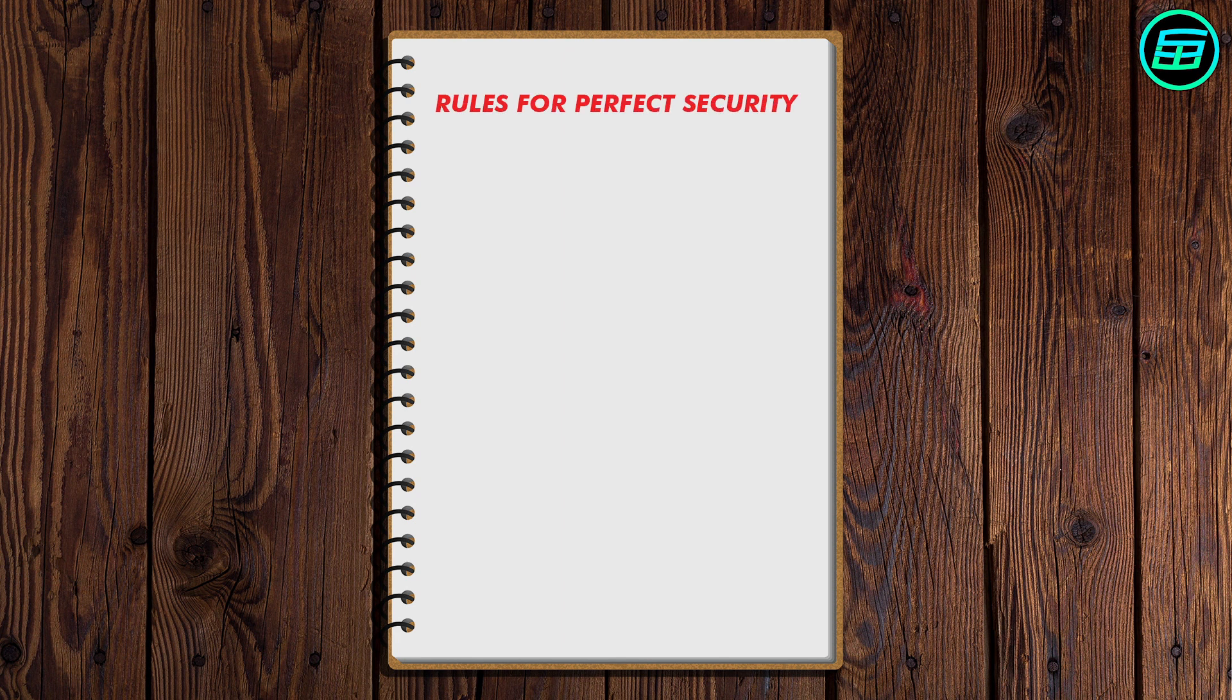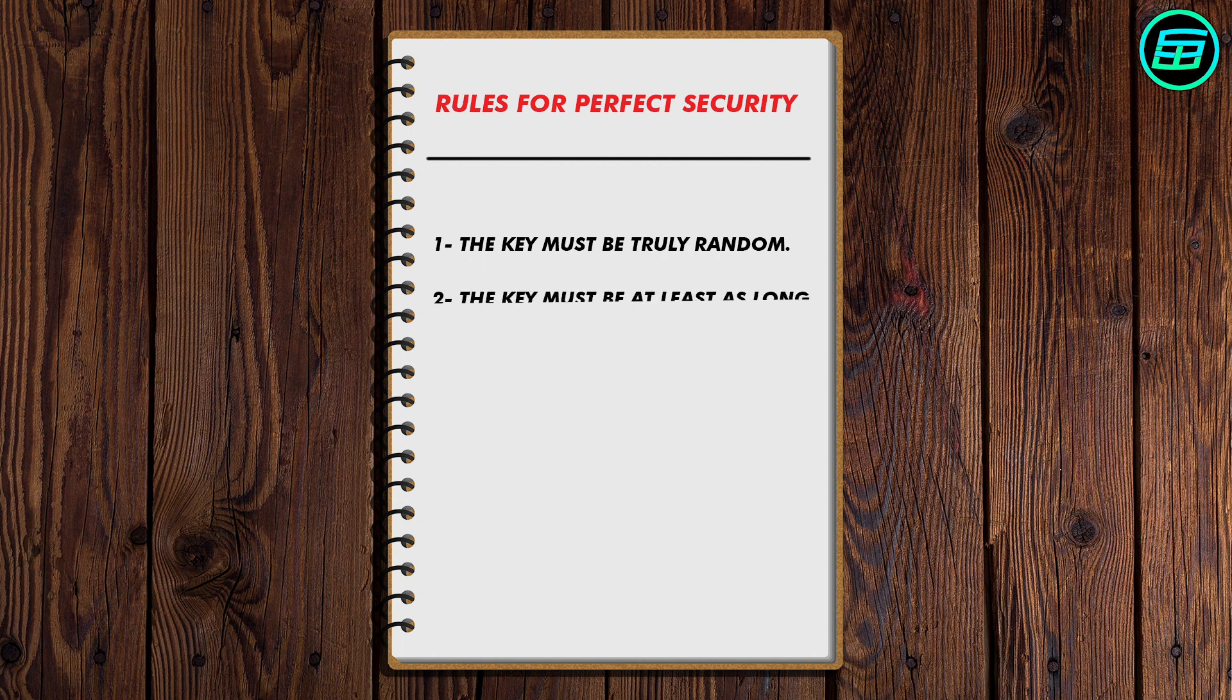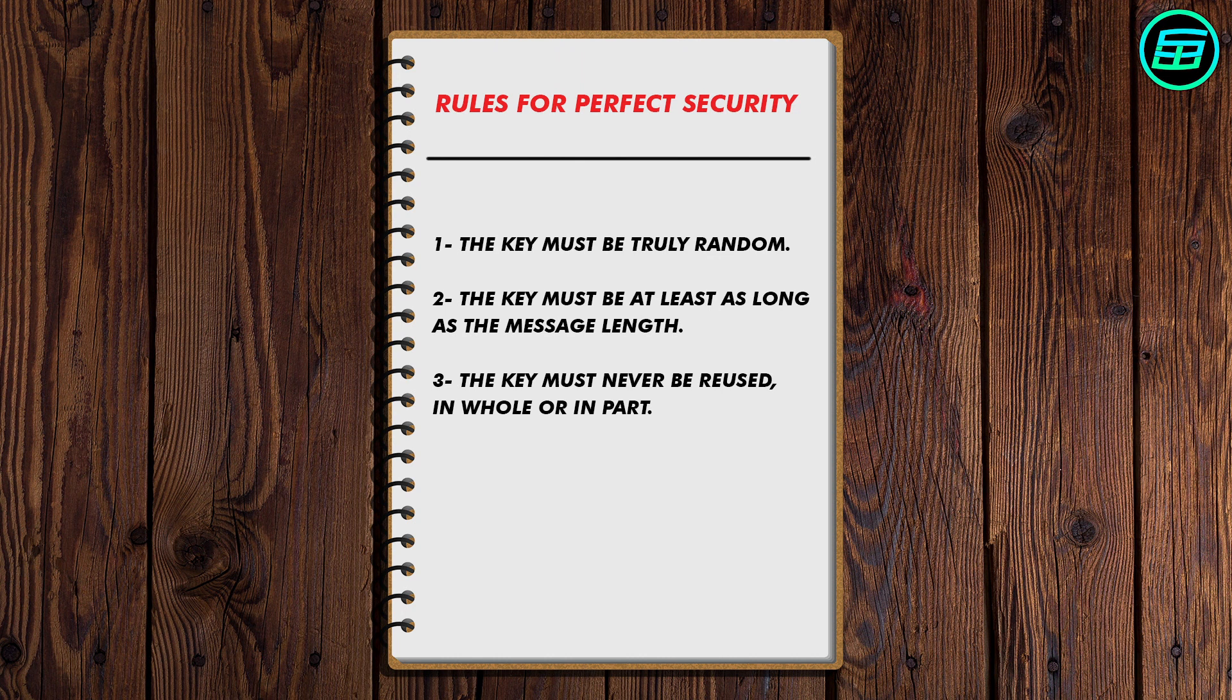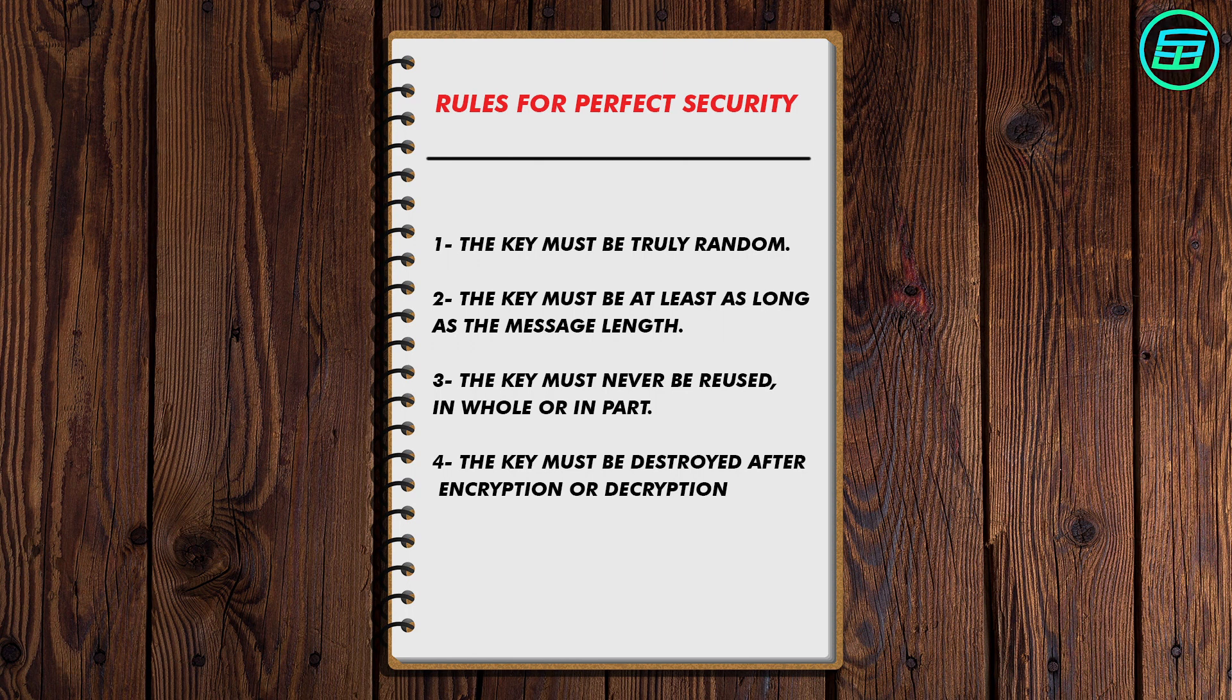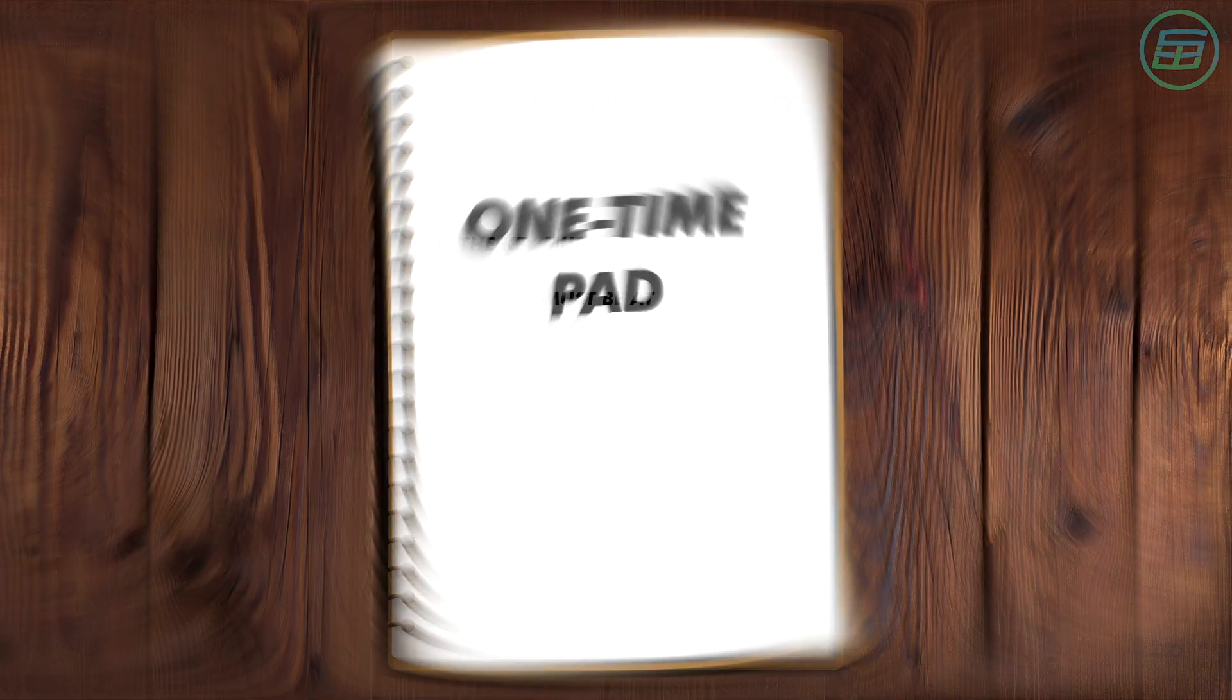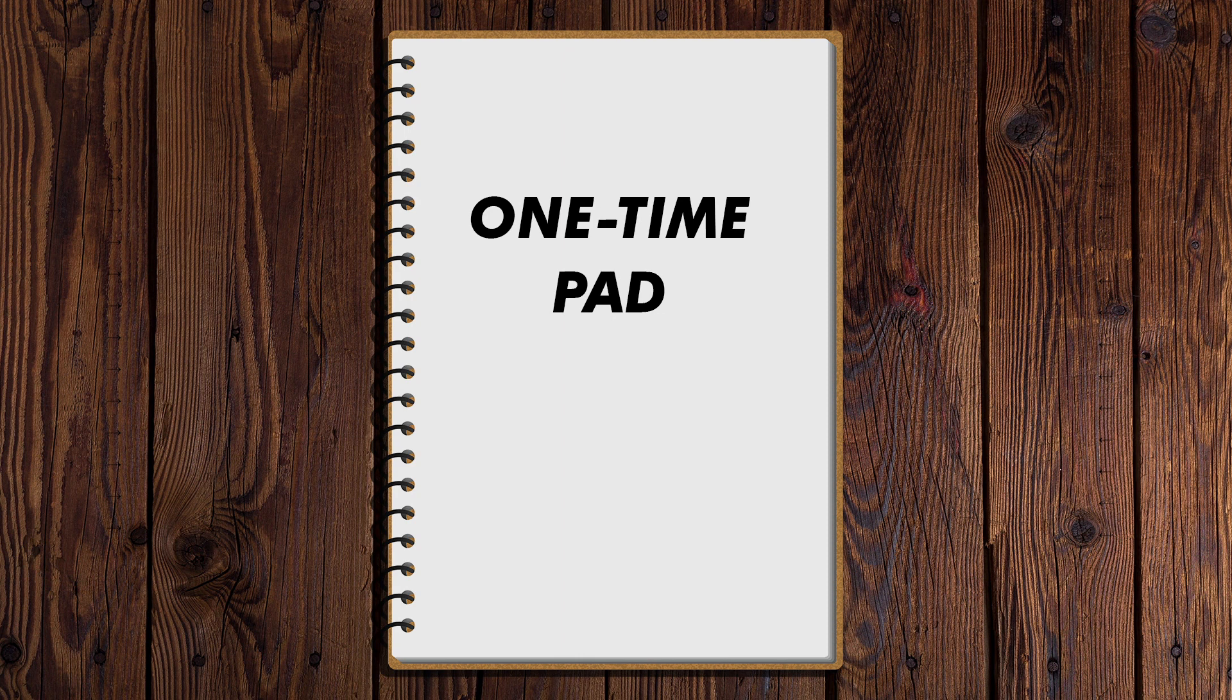It's vital that the following rules are followed. The key must be truly random. Some algorithms generate random characters or numbers in a repeated pattern. The key must be at least as long as the message length. The key must never be reused in whole or in part. And the key must be destroyed after encryption or decryption. If these conditions are met, all encrypted communication using the one-time pad method is impossible to crack.